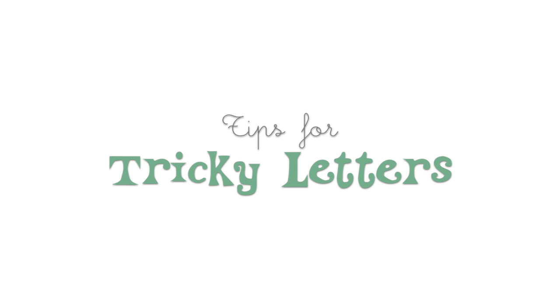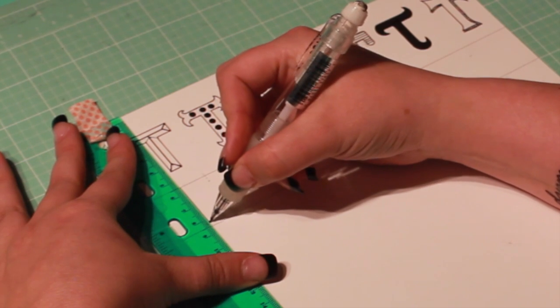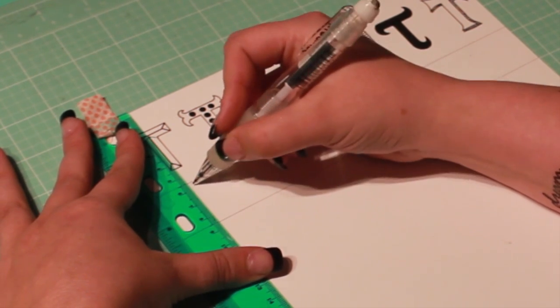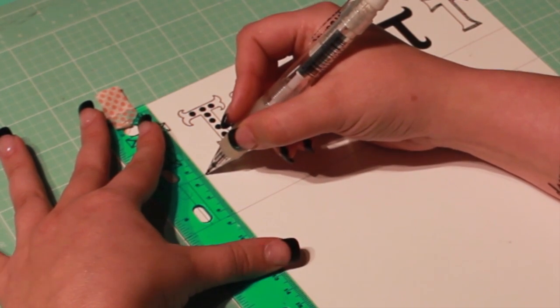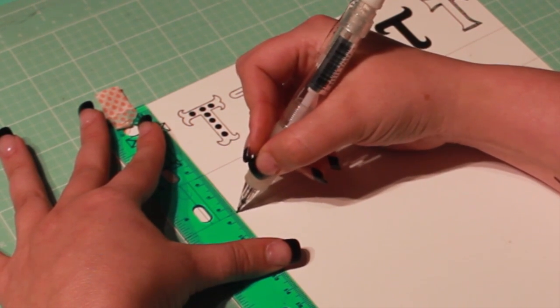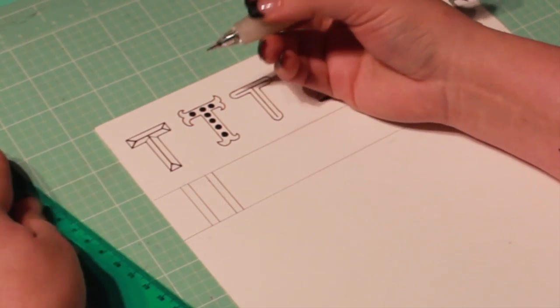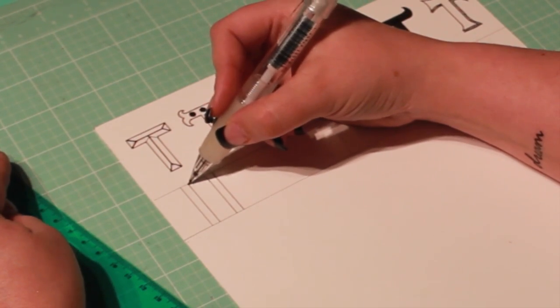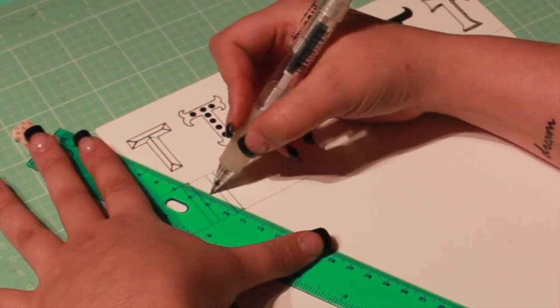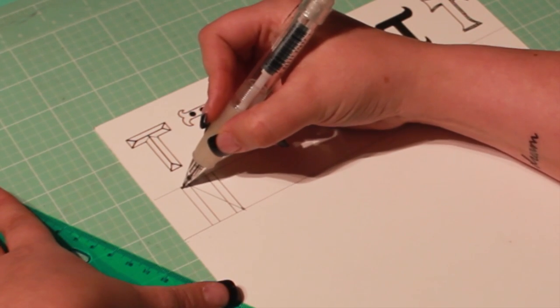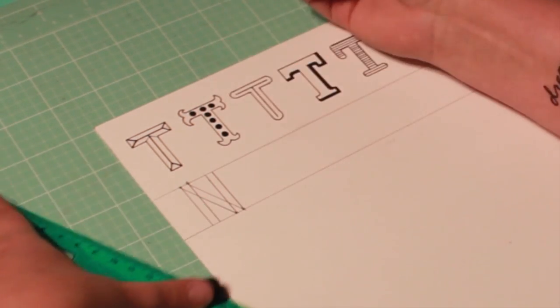Now that we've practiced some different styles with an easy letter, I'm going to share a few tips for the trickier letters. For letters with multiple stems like N, M, and H, I like to start by drawing all the stems first. To draw the connecting leg on the N, draw a line from the top right corner to the bottom right corner on the opposite stem. Then draw a line from the top left corner to the bottom left corner.